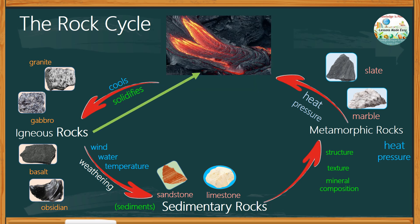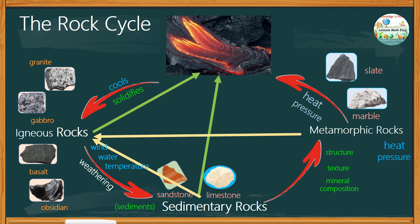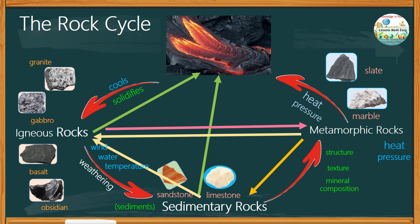Take note that any rock type can melt into magma and become igneous rocks. Any rock type can be weathered or eroded into sediments, forming sedimentary rocks. Any rock type can be subjected to heat and pressure, forming metamorphic rocks — which also means that not only sedimentary rocks can turn into metamorphic, but also igneous rocks as well.